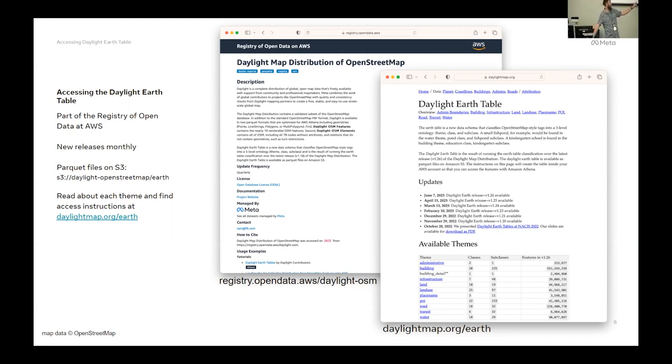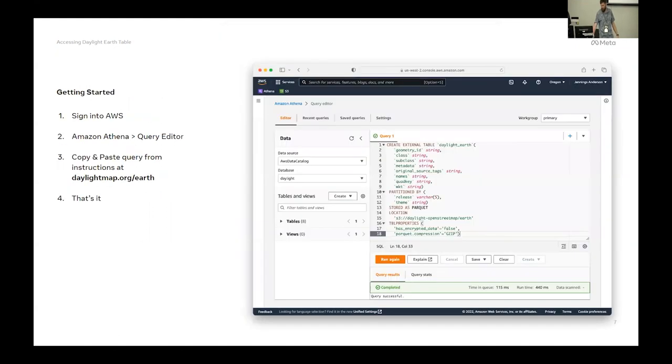So we'll take a look here. You can go to daylightmap.org. See more information about each of the themes, and there's feature counts and what's actually in there.